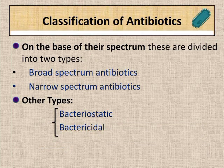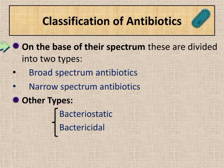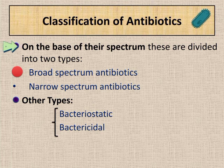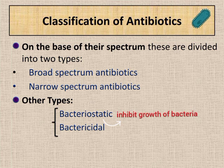Classification of Antibiotics: On the basis of their spectrum, these are divided into two types — broad spectrum and narrow spectrum antibiotics. Bacteriostatic and bactericidal are other types.